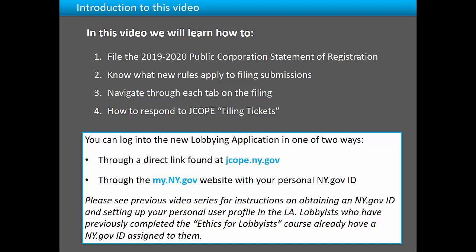In this video, I will explain how to file the 2019-2020 Public Corporation Statement of Registration, know what new rules apply to filing submissions, and how to navigate through each tab on the filing. You can log into the lobbying application through a direct link on Jacob's website or through the my.ny.gov website with your personal ny.gov ID. Please see our previous video series for instructions on obtaining a ny.gov ID and setting up your user profile in the lobbying application. Lobbyists who have previously completed the Ethics for Lobbyists course already have an ny.gov ID assigned to them.